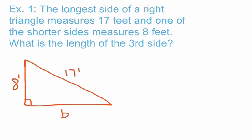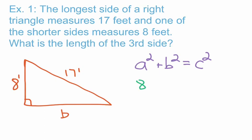Our Pythagorean Theorem is A squared plus B squared equals C squared. We need to substitute our values from our diagram into the equation. I'm going to substitute 8 in for A and 17 for C. So when we rewrite this, we get 8 squared plus B squared equals 17 squared.